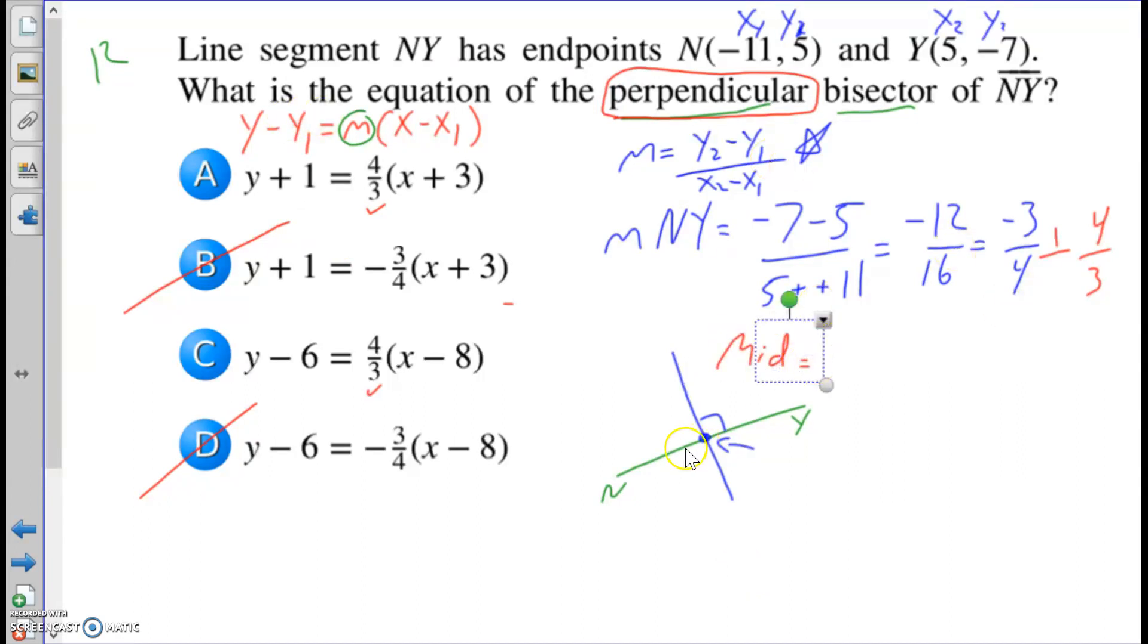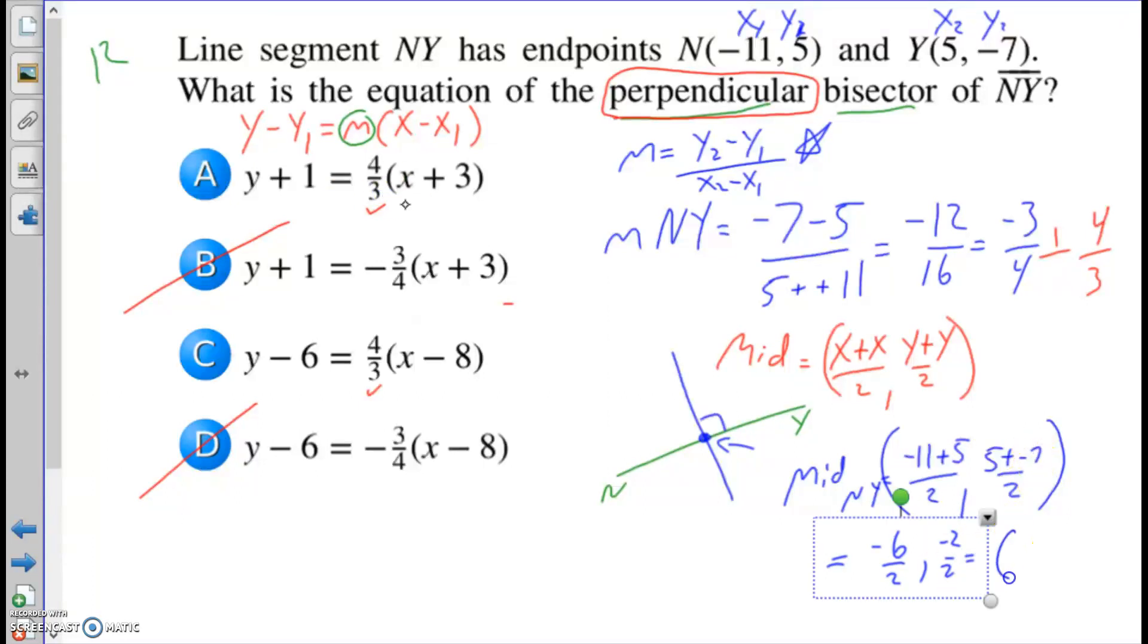The midpoint formula, very important like your slope formula, is add them up. x₁ and x₂. Divide by 2. And add up your y's. And divide by 2. So for the midpoint of NY, that would be negative 11 plus 5. Right? We're not subtracting this time. The midpoint is the one coordinate formula we have that has addition signs in it. So negative 11 and 5. The x values. Add them up. Divide by 2. 5 and negative 7. Add them up. Divide by 2. Negative 11 plus 5 is negative 6. Half that. 5 and negative 7 is negative 2. Half that. We're going to end up with a midpoint of negative 3, negative 1.